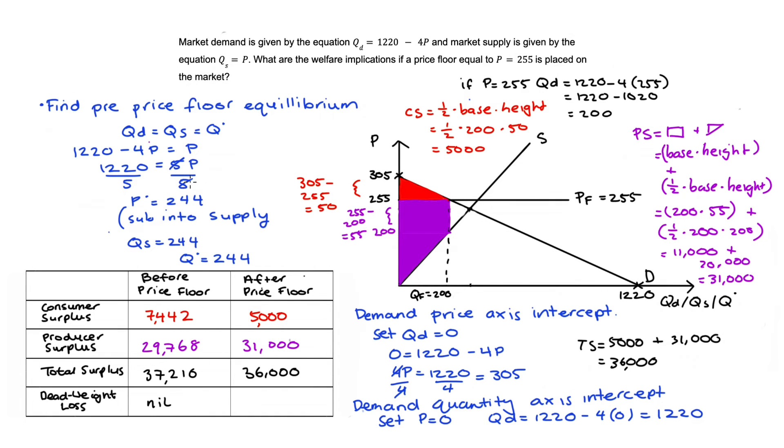Our total surplus is lower so we see a general reduction in welfare as a result of the price floor. Producers have actually gained from this price floor. Their original surplus was 29,768 and now they get 31,000. The producers get a higher price than in equilibrium and that's been good for them overall. Consumers have lost out, getting only 5,000 instead of 7,442. The reduction in total welfare is captured by deadweight loss. We take the difference: 37,210 - 36,000 = 1,210.